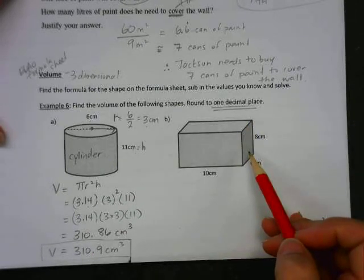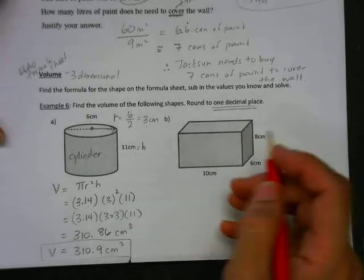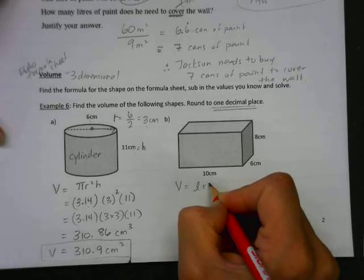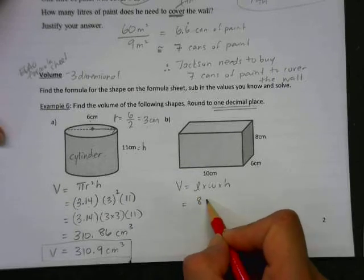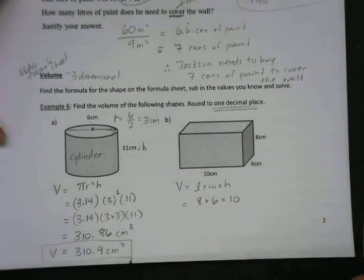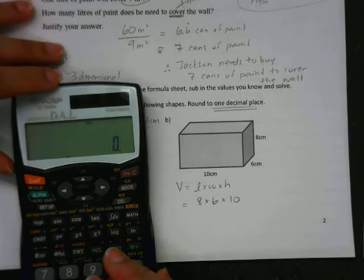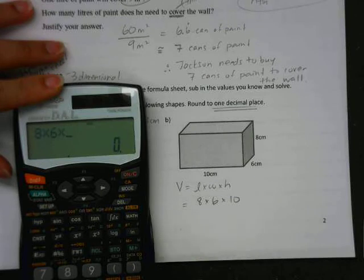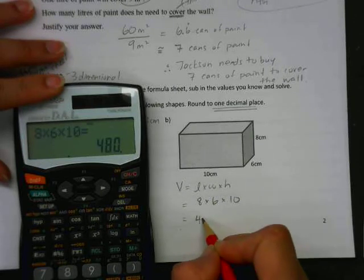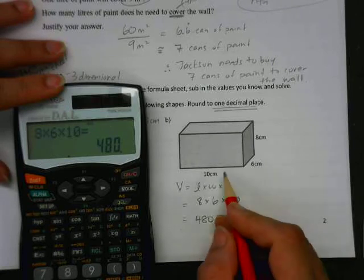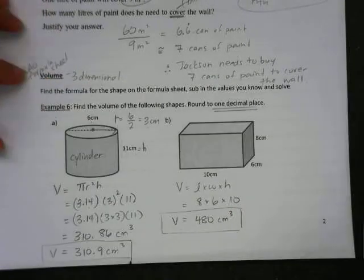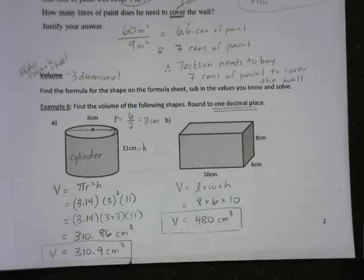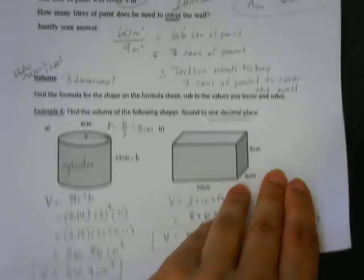The next shape is a rectangular prism. Volume equals length times width times height — those are the three dimensions. Plugging in: 8 times 6 times 10 equals 480. Volume is three dimensional, all units are in centimeters, so the answer is 480 centimeters cubed.